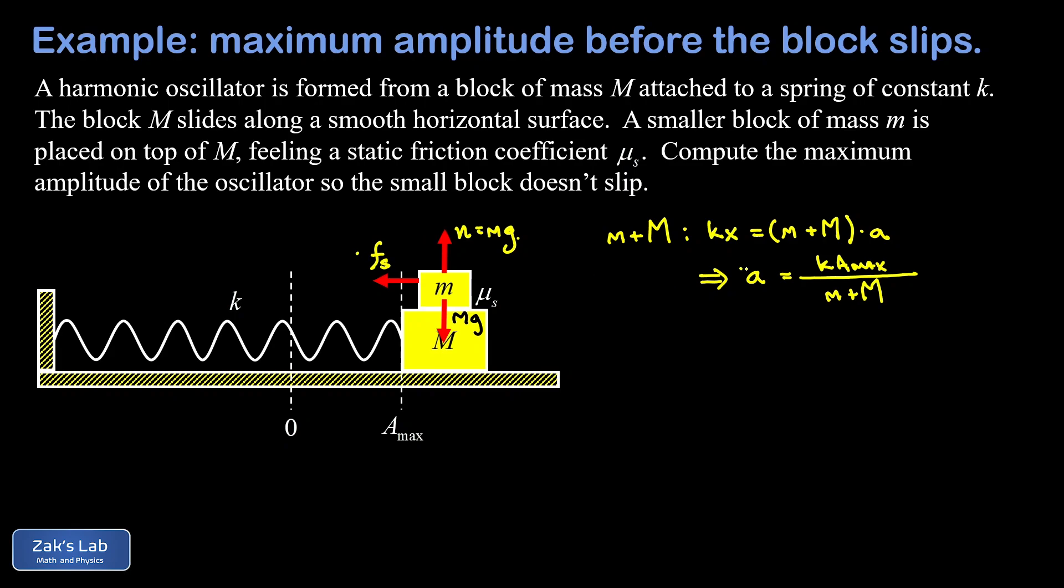That static friction force must be the thing responsible for the observed acceleration of that little mass m. So we're going to do a Newton's second law analysis on the little block now. We're thinking F_net equals ma in the horizontal direction, and the net force there is f_s, the mass of the block is little m, and our acceleration is little a.